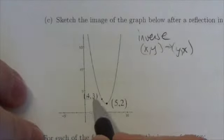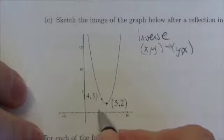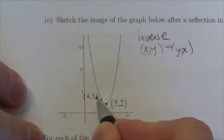So that means the point (4,3) is going to become the point (3,4). So 1, 2, 3. Okay, well that's maybe a little awkward there.